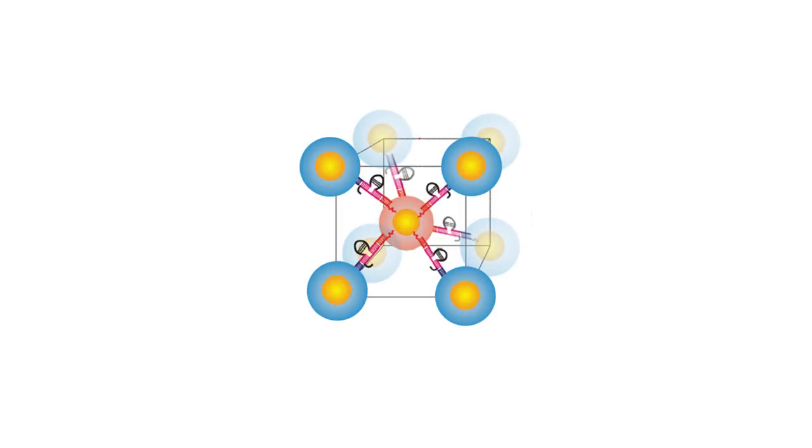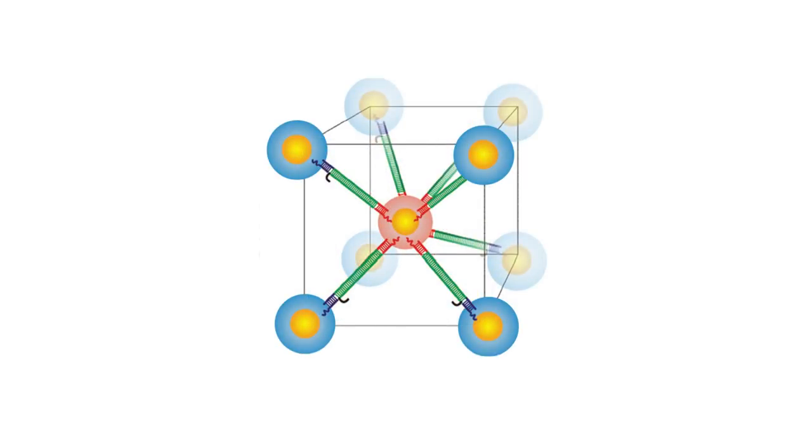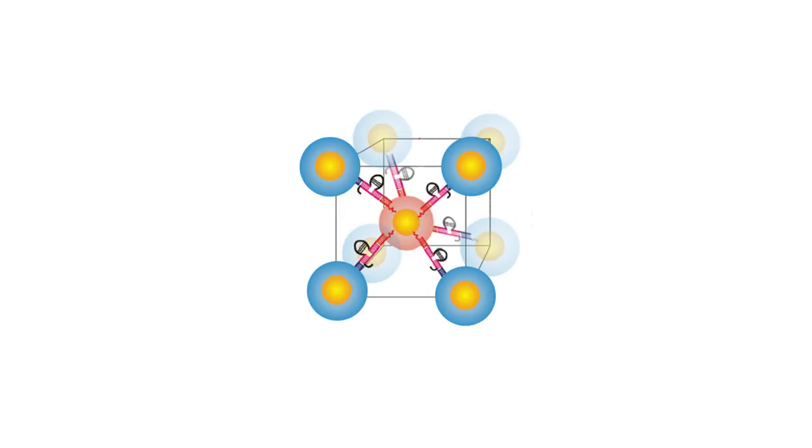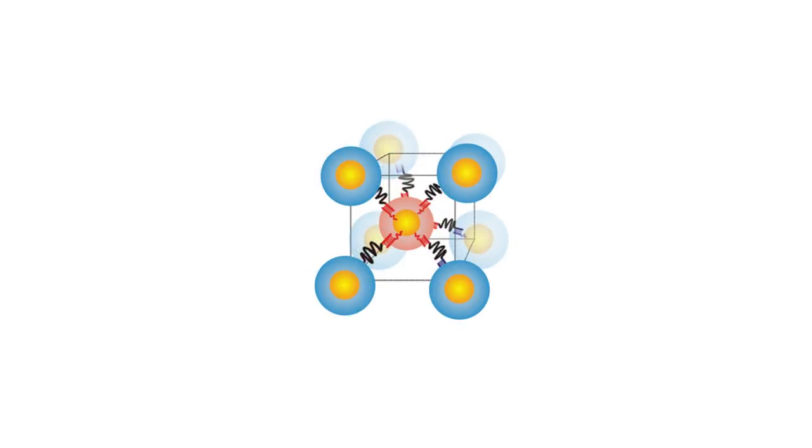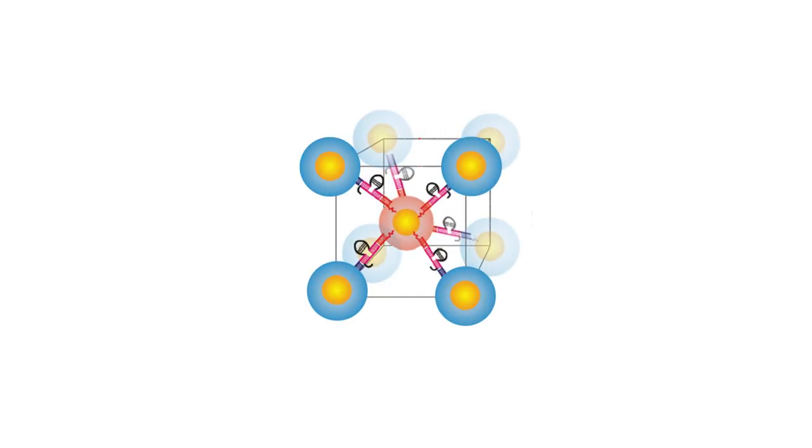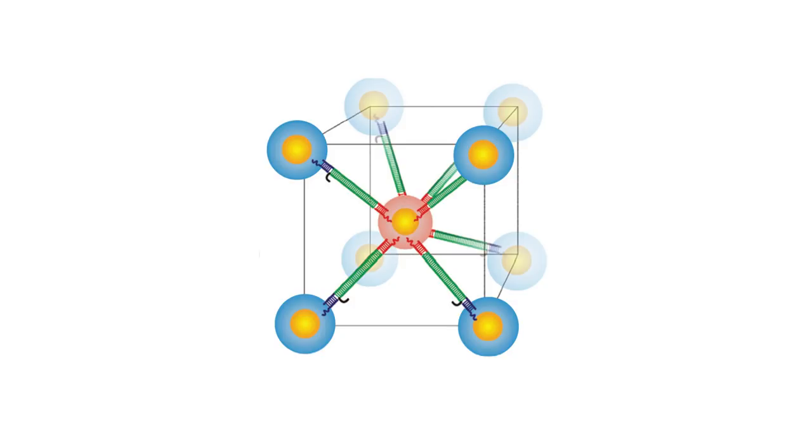By adjusting the length of the DNA strands, scientists can tune the distance between the gold particles. These changes may be incredibly small, but they can drastically alter the optical and electronic properties of the material on the macroscopic scale.